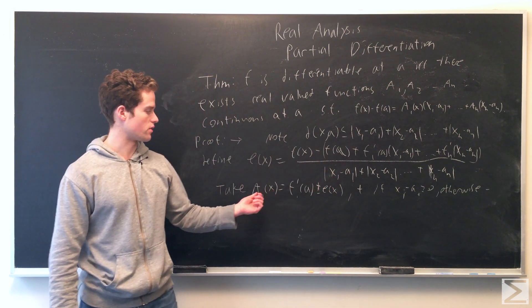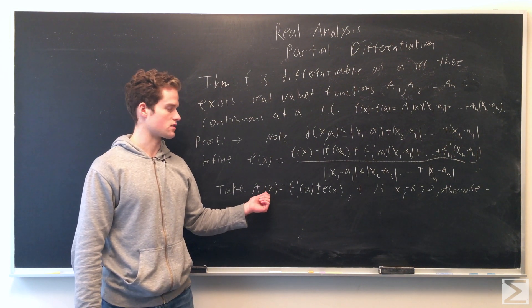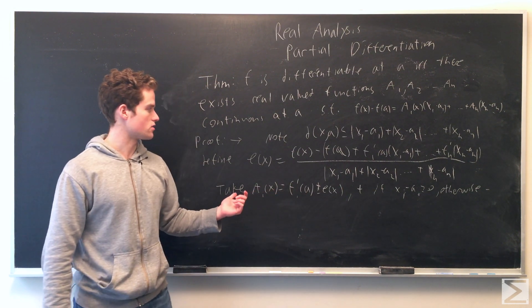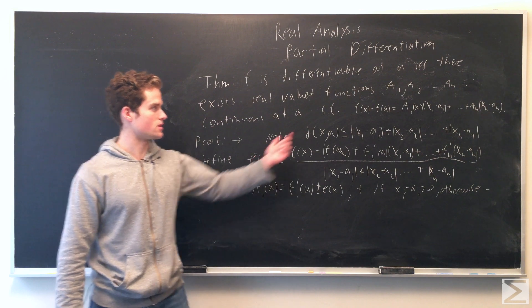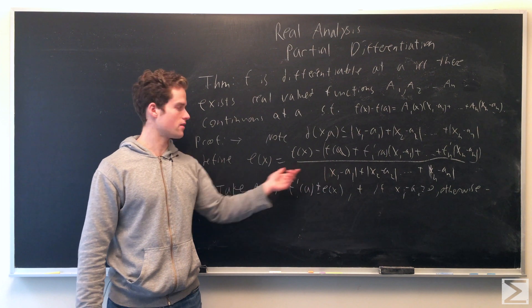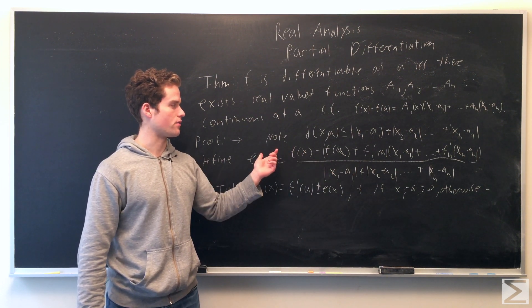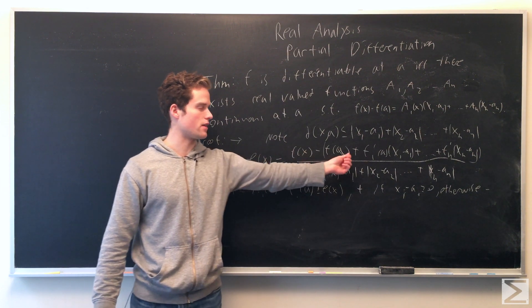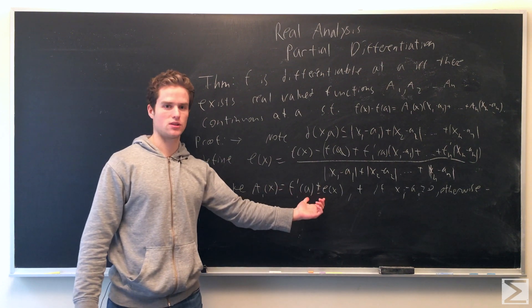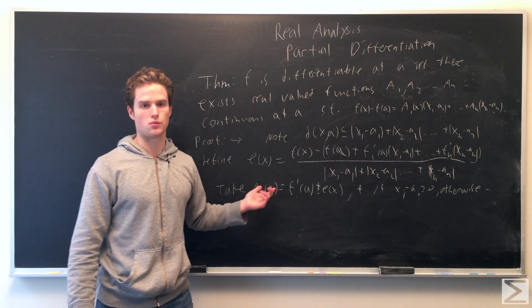If we define it like this, note that a_i(x) is in fact continuous as x approaches a: a_i approaches f'_i(a). Also note that f(x) - f(a) satisfies this equation, which we can see by multiplying by the denominator, bringing it to the left side, and adding the f'_i(a)(x_i - a_i) terms. These are continuous functions at a, so that's one direction.